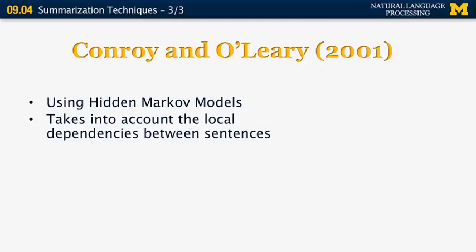The first one is by John Conroy and Diane O'Leary from 2001. It uses Hidden Markov Models for text summarization. The idea is that we want to take into account the local dependencies between sentences. You don't want to include sentences in the summary randomly, independent of one another.